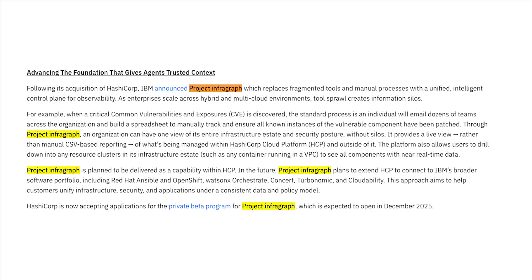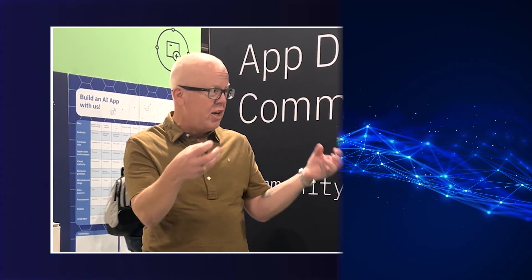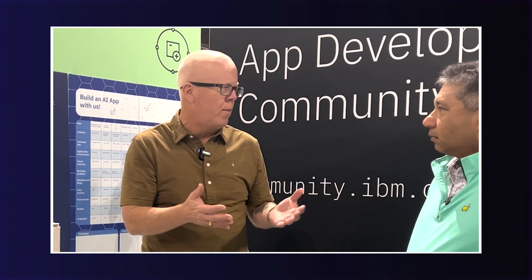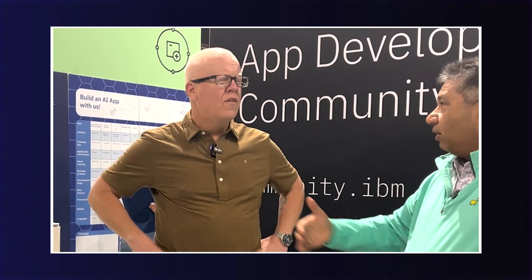InfraGraph is built on the HashiCorp Cloud Platform. That is a unified observability platform for all of your tools. What I like about it is just how intuitive it is and how it visualizes the connections and highlights choke points, gaps — it just makes things more visual. And I don't want to make you think that InfraGraph is only security — there are a lot of developer implications and observability use cases. But the example they gave was a security use case: typically if you have a CVE, a critical vulnerability, there's a whole bunch of steps you have to take and emails you have to send to different teams to track that vulnerability. It's very manual.